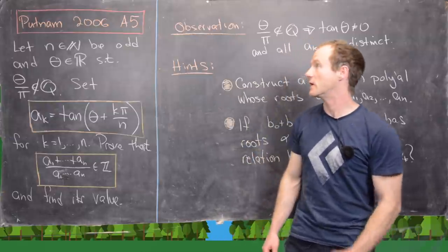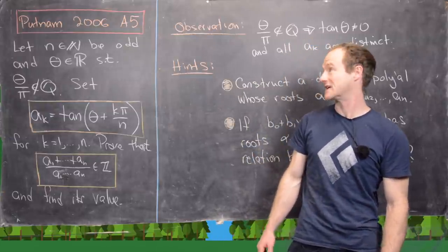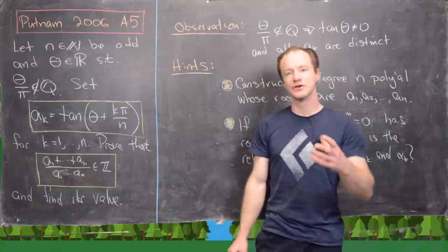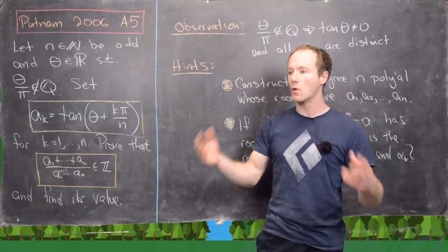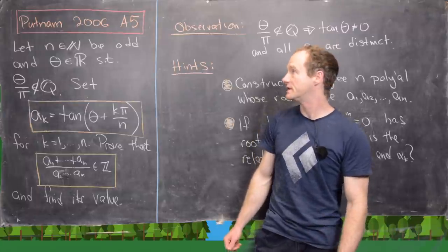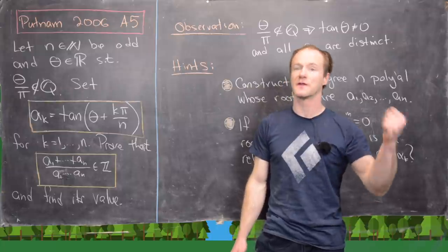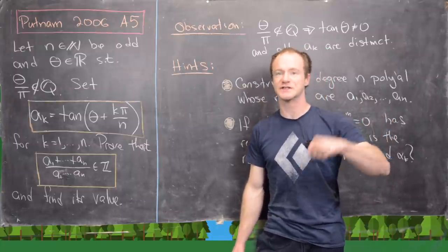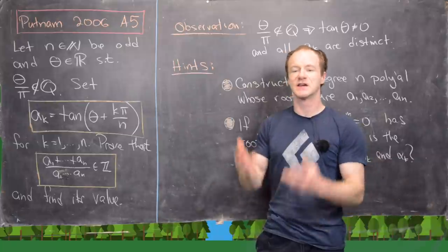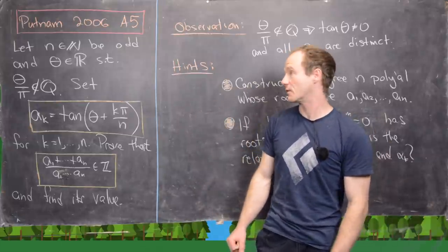Today we're doing another Putnam video. In particular, we're going to look at the 2006 exam, question A5. You've been asking me to do something more than just A1, A2, B1, and B2, so here's one from A5. There are six questions in the morning and six in the afternoon, so this is the next-to-hardest question in the morning session.